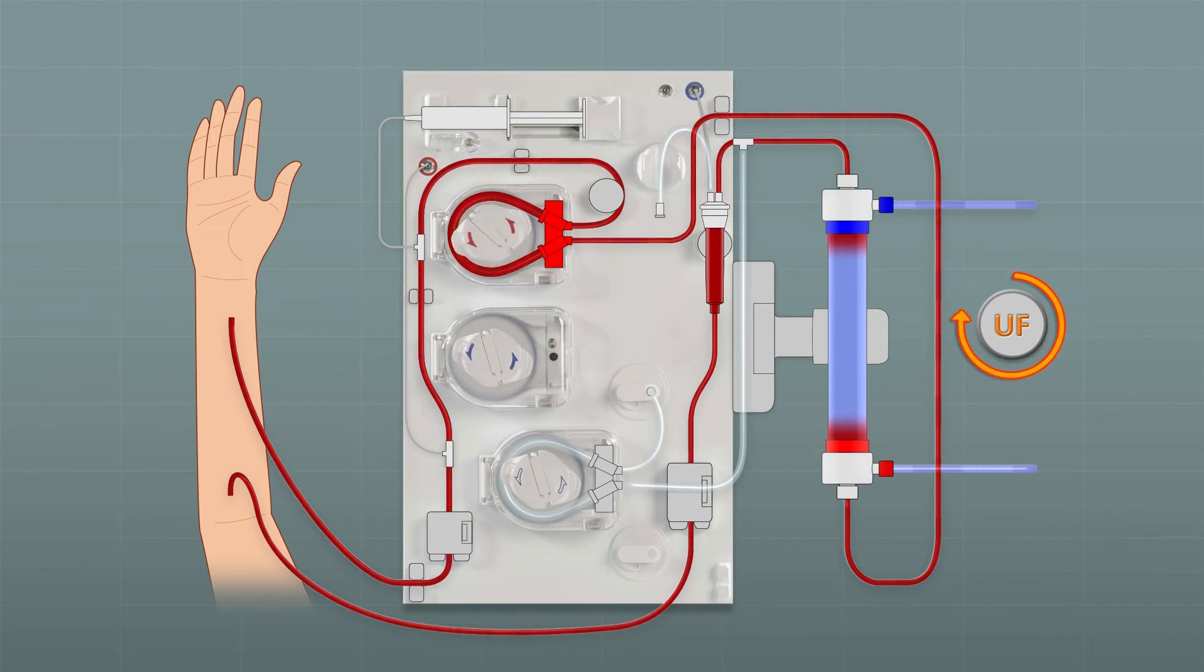The blood will fill the dialyzer from top and bottom as the remaining priming volume is removed.